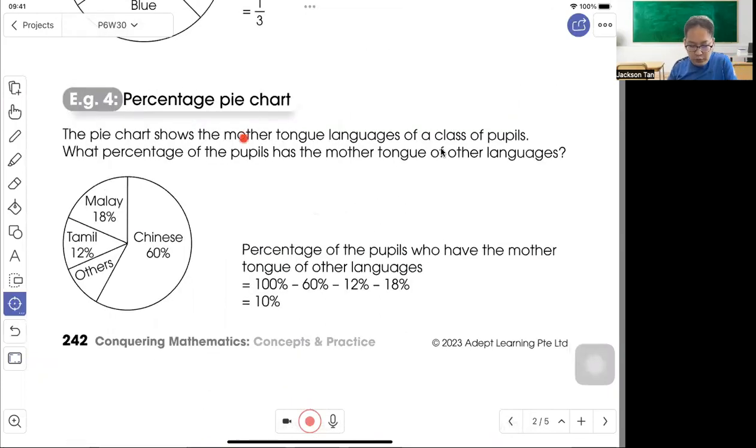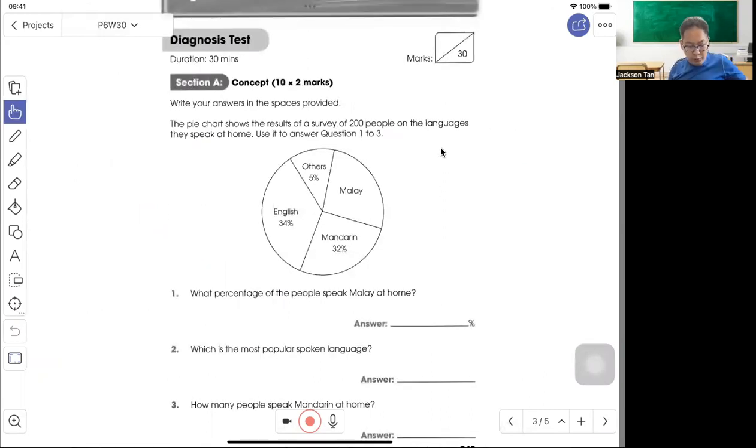Percentage pie chart. So here shows the mother tongue of a class of pupils. What percentage of the pupils has the mother tongue of other languages? So 100% minus 60, 18, 12, you'll get 10%. Let's do some questions.